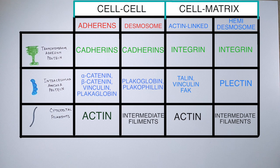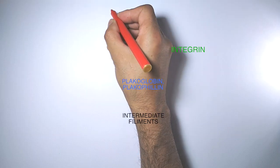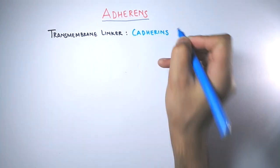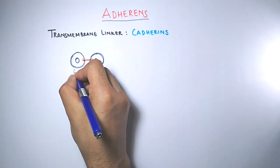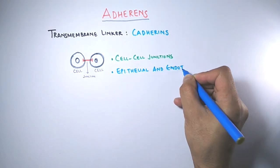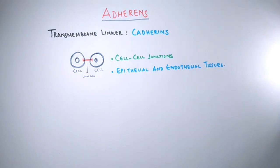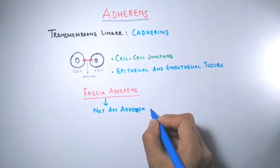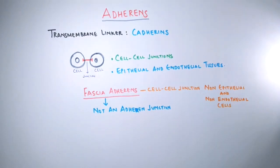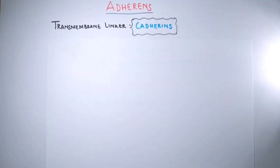Now we will briefly discuss adherens junctions. The transmembrane linker for adherens junctions is cadherin, and it is the cadherin molecule that bridges the two cells. This cadherin junction is found in epithelial and endothelial cells. It should not be confused with fascia adherens, which is also a cell-to-cell junction but found in non-epithelial and non-endothelial cells — so it is not an adherens junction.